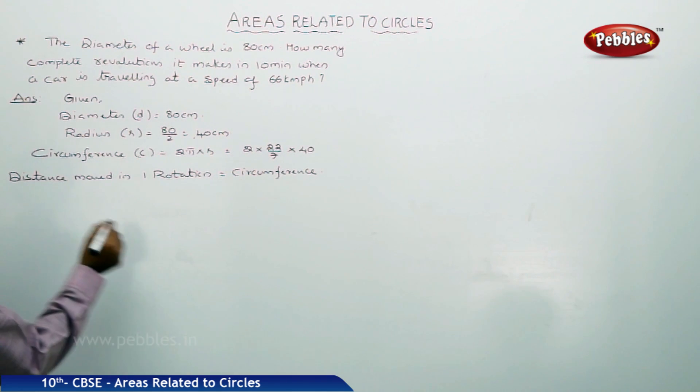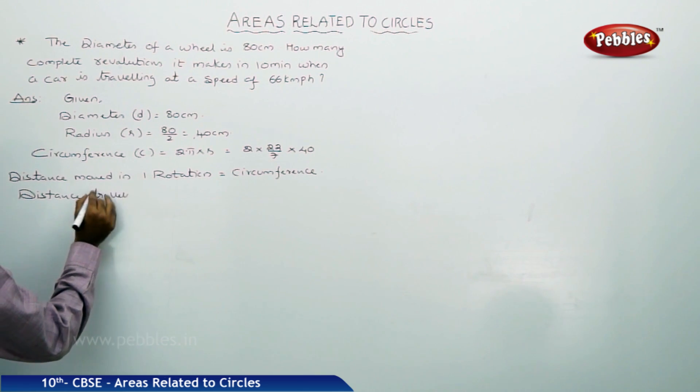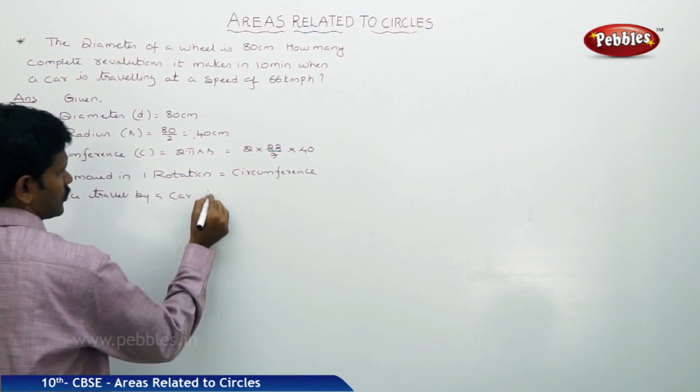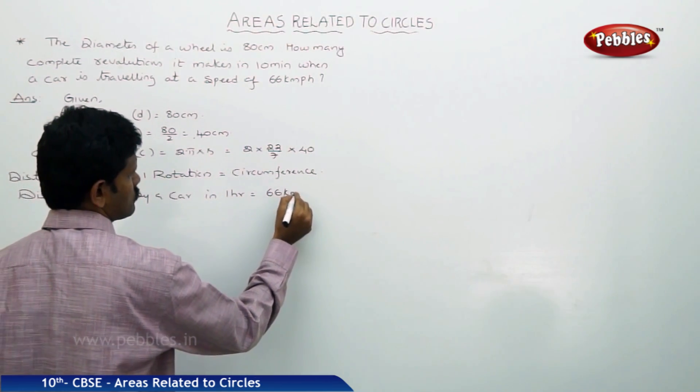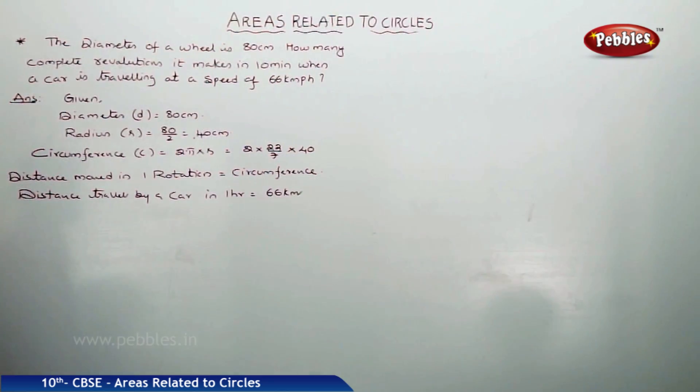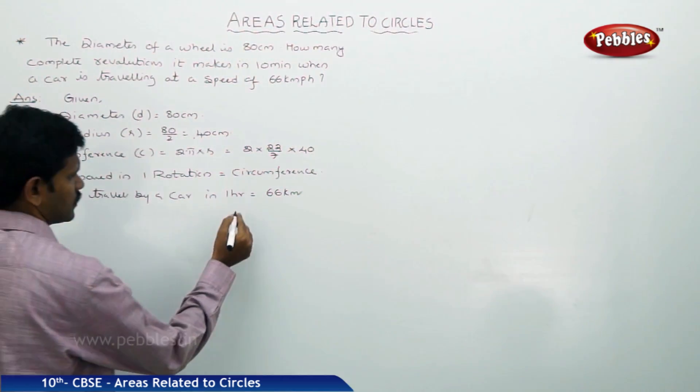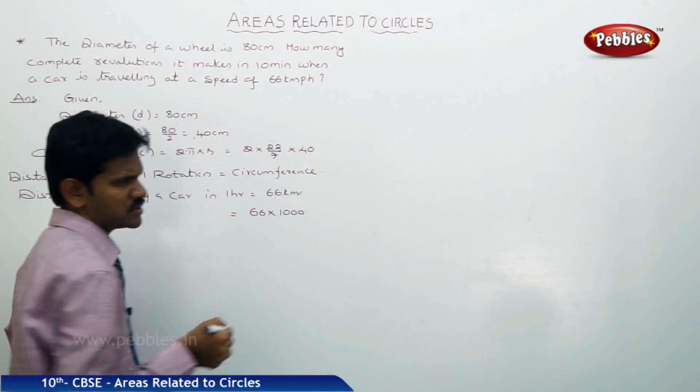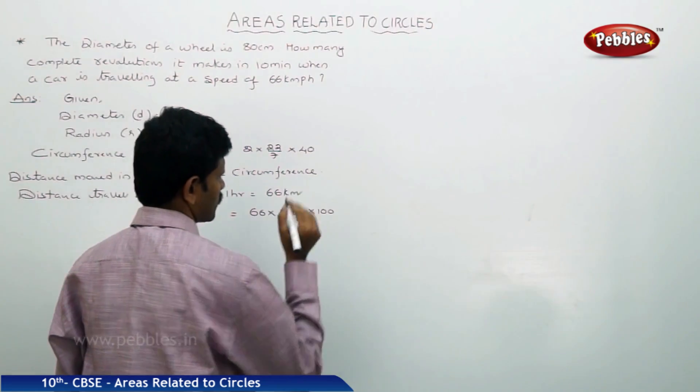Now, distance traveled by a car in 1 hour is equal to 66 kilometers, but our wheel is in terms of centimeters. That is why convert this into 66 times 1 kilometer, nothing but 1000 meters, and 1 meter is equal to 100 centimeters.